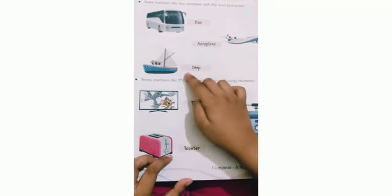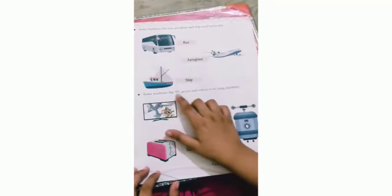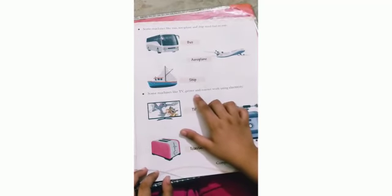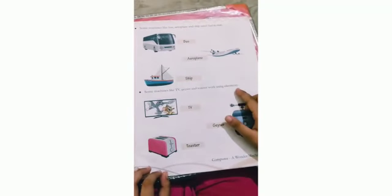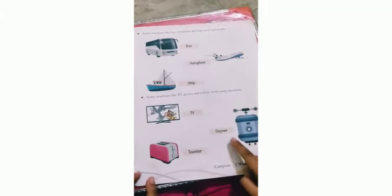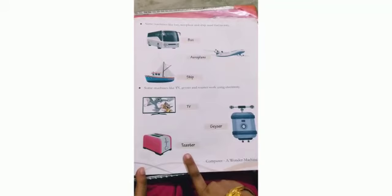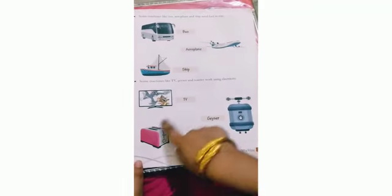Some machines like TV, geyser and toaster work using electricity. This is TV, this is geyser and this is toaster. These machines work on electricity.